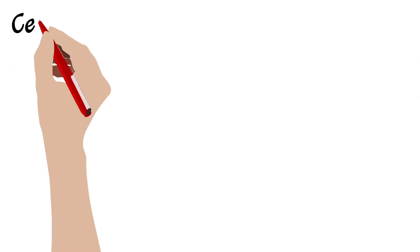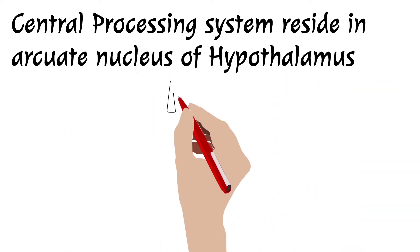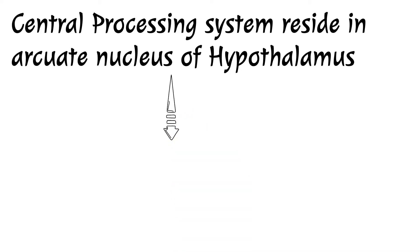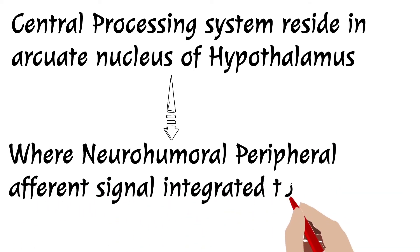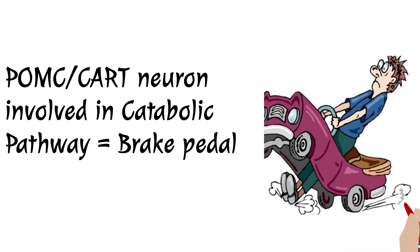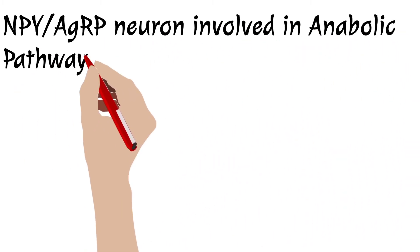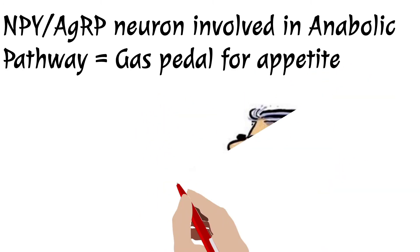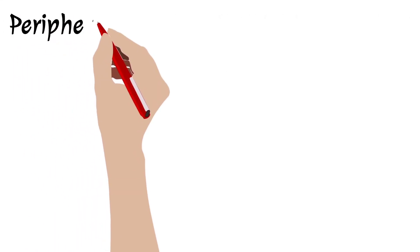The central processing system is the hypothalamus, where the arcuate nucleus plays a very important role. Peripheral afferent neurohumoral signals are integrated here to generate an efferent signal. In the catabolic pathway — the 'brake pedal' — POMC/CART neurons are involved. In the anabolic state, the NPY/AgRP neurons are involved, acting as a 'gas pedal' for appetite stimulation.